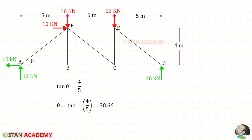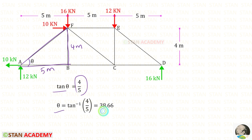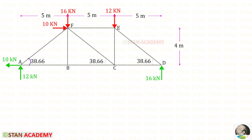Now we need to find the member forces. Before that, we need to find the angles. Let us take this triangle and find the angle theta. Tan theta is opposite side divided by adjacent side. The opposite side is 4 meters and the adjacent side is 5 meters, so it will be 4 upon 5, and theta will be 38.66 degrees. If this angle is 38.66, this angle and this angle should also be 38.66.